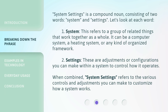System settings is a compound noun consisting of two words: system and settings. Let's look at each word. First, system. This refers to a group of related things that work together as a whole. It can be a computer system, a heating system, or any kind of organized framework.